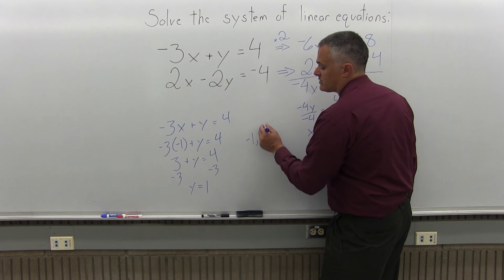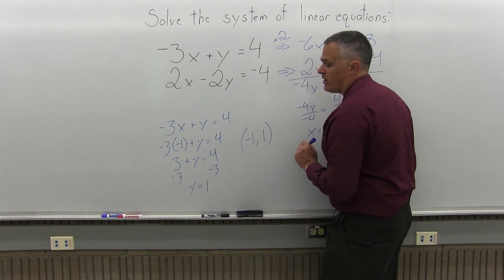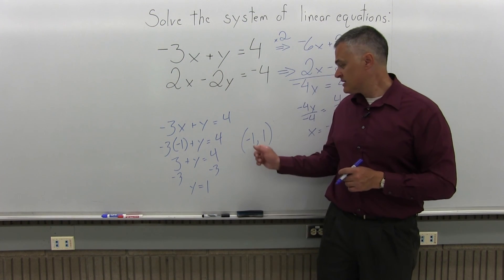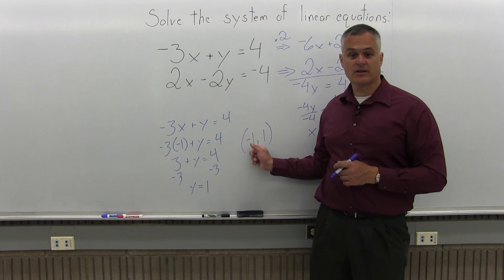Or you can write it this way. The point negative 1, positive 1 is the point that is the solution. This is the point where the lines would intersect if you drew the graph.